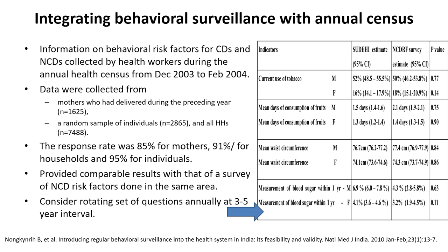Today we are moving toward NCDs. We want to monitor the population: how many are smoking, how many are taking fruits and vegetables. These are usually done through large surveys, but in a small population — because we go to houses every year as part of the census — we can add a few questions and collect this vital information to know what is happening to tobacco use over a period of time. We introduced such questions as part of the regular census, and the data collected in surveillance mode gave almost similar answers to research-mode data, showing this is not only feasible but also gives valid results.